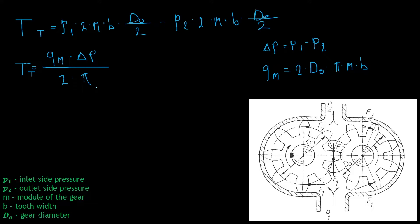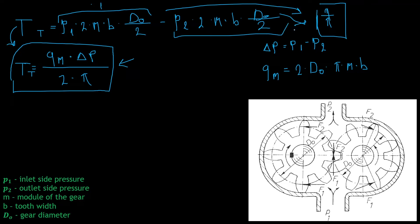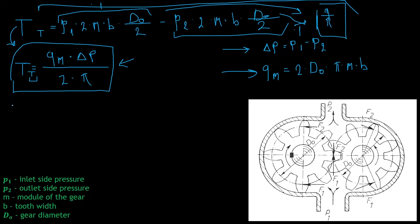For your homework, think about how we converted the big equation to this simplified form. A hint: we added pi divided by pi, which equals 1, so multiplying by it changes nothing. This is the equation for the theoretical torque of the hydraulic motor, which must be corrected with the hydromechanical efficiency factor in order to get the effective torque of the motor.